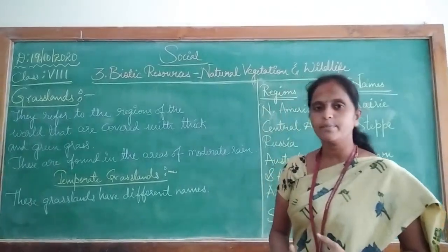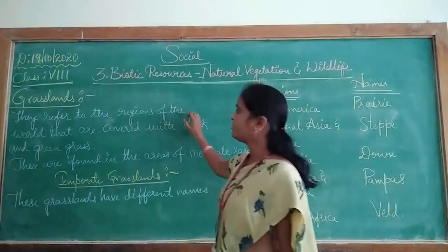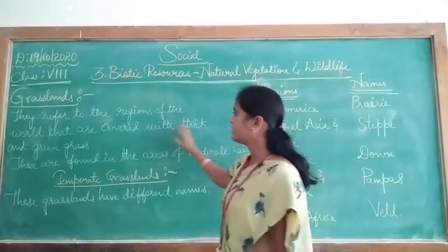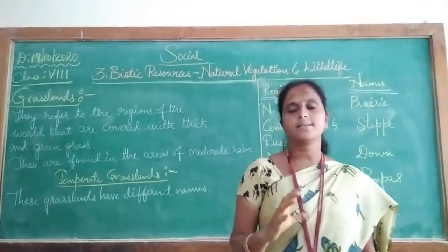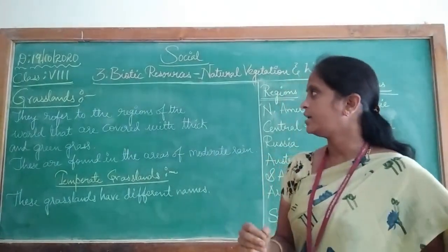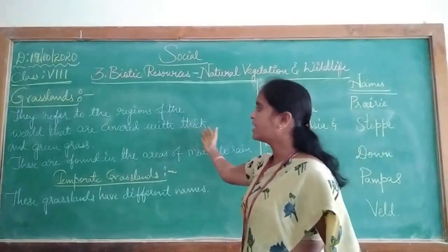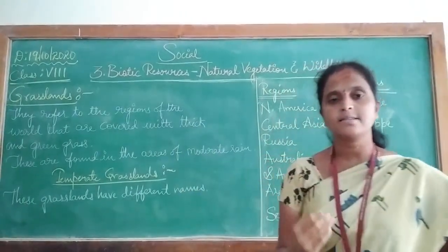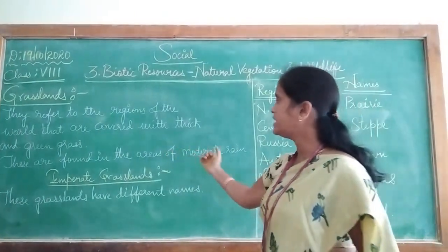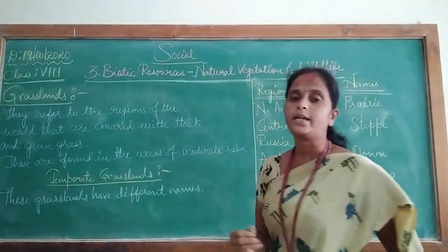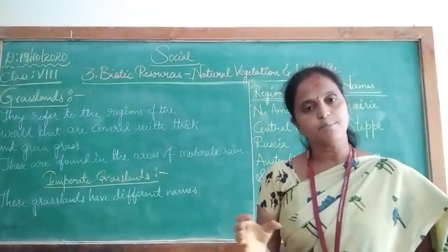Grassland refers to the region of the world that are covered with a thick and green grass. Grasslands are normally found in the areas of moderate rain.